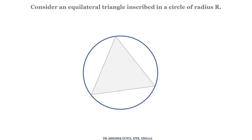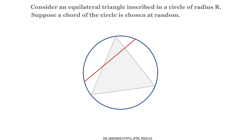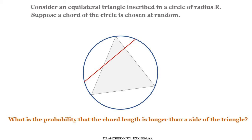Our problem statement is as follows: we consider an equilateral triangle inscribed in a circle of radius r, then we choose a chord of the circle at random. We need to calculate the probability that the chord length is longer than a side of the triangle. Since this is an equilateral triangle, all the sides are the same. So if we choose any chord in this circle uniformly at random, what is the probability that the chord length is longer than the side of the triangle?